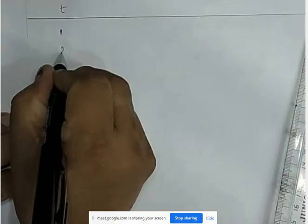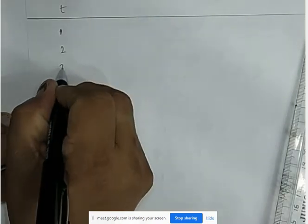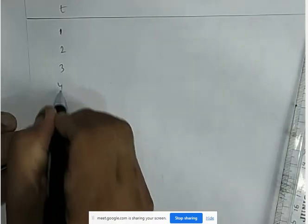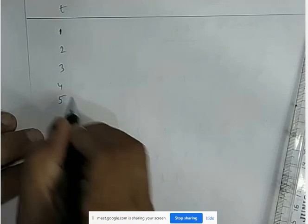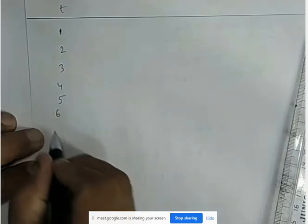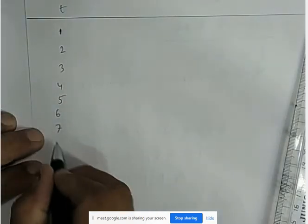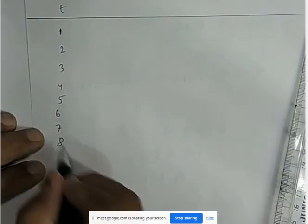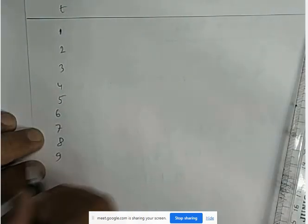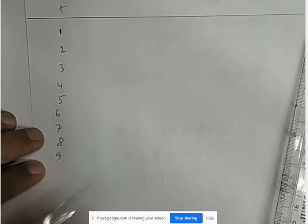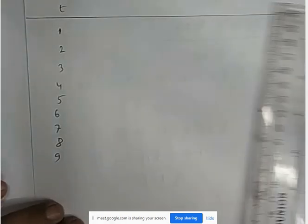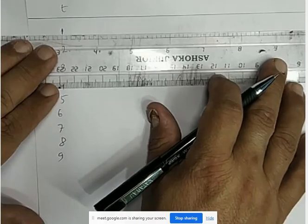We set up the table with months: January, February, March, April, May, June, July, August, September — numbered 1, 2, 3.